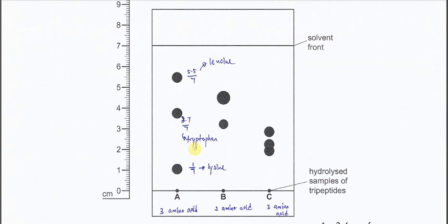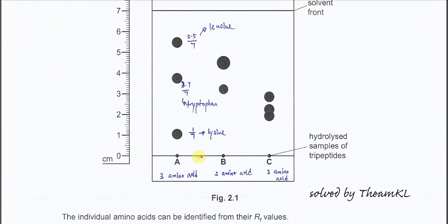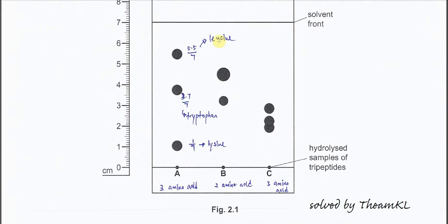This one we will discuss later, how we identify that, all these amino acids. So from here, the paper chromatography, we can see how many amino acids that being separated.